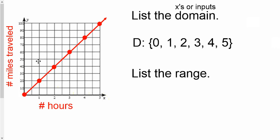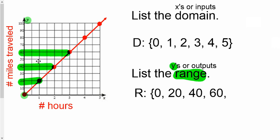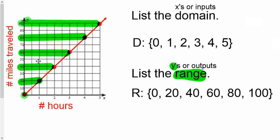Now, if they said please list the range, please remember that the range is a list of all the y's, or another name is all the outputs. So you can put a capital R right there and then start listing them. The first one I see is zero, that's right there on the zero on the y-axis. And then the 20, the 40, the 60, the 80, and the 100. And I'm done.